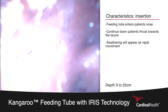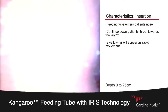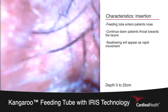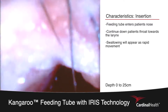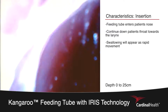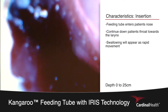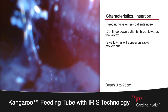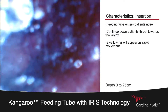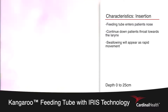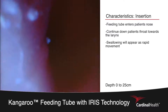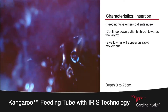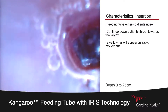The procedure begins with the placer inserting the feeding tube into the patient's nose, as can be seen by the nasal hair. The tube then progresses down the back of the patient's throat heading towards the larynx. We visualize some rapid movement, which is the patient swallowing to assist with feeding tube placement.